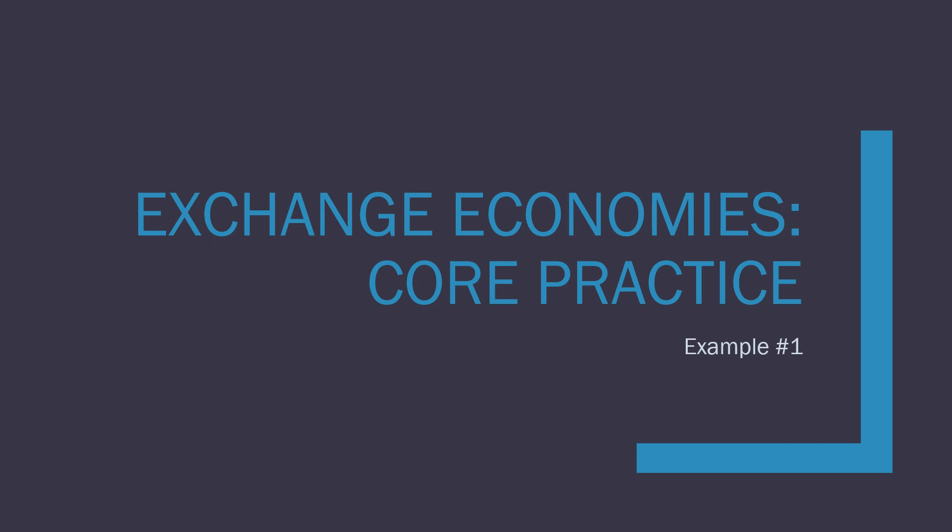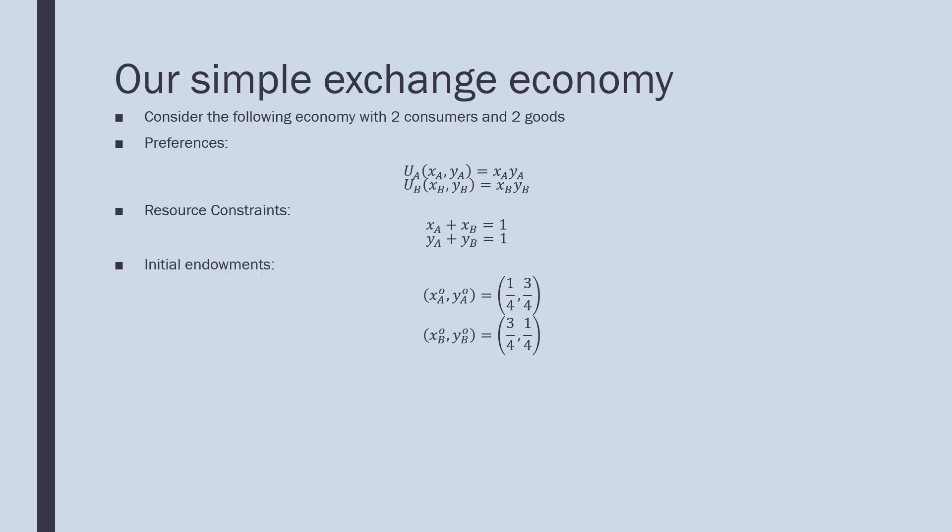Hey guys, what's up? In this video we're going to talk about solving for the core of an exchange economy. Let's go. Consider the following economy with two consumers and two goods. Our economy is described by our consumers' preferences, which are Cobb-Douglas-like, but without the elasticity—they're just being multiplied together.